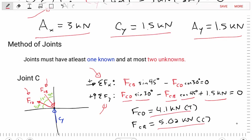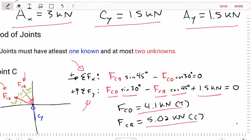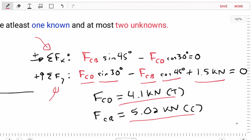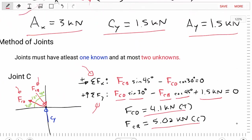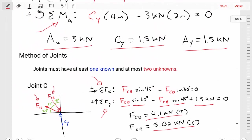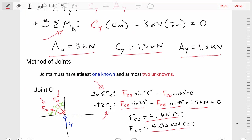Solving those equations, we find FCD equals 4.1 kilonewtons in tension, and FCB equals 5.02 kilonewtons in compression. Using the method of joints, we've found the forces in two of the truss members.